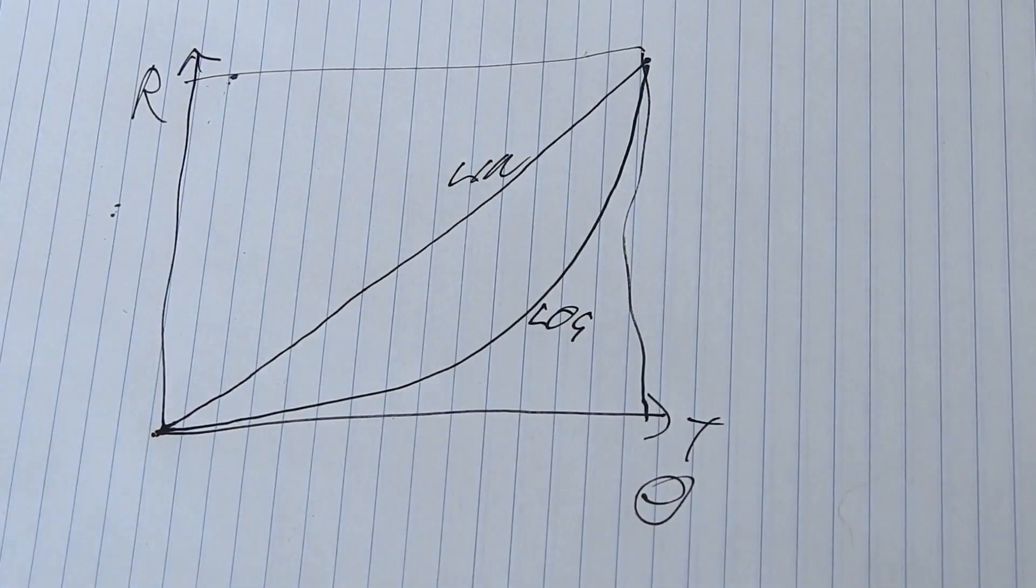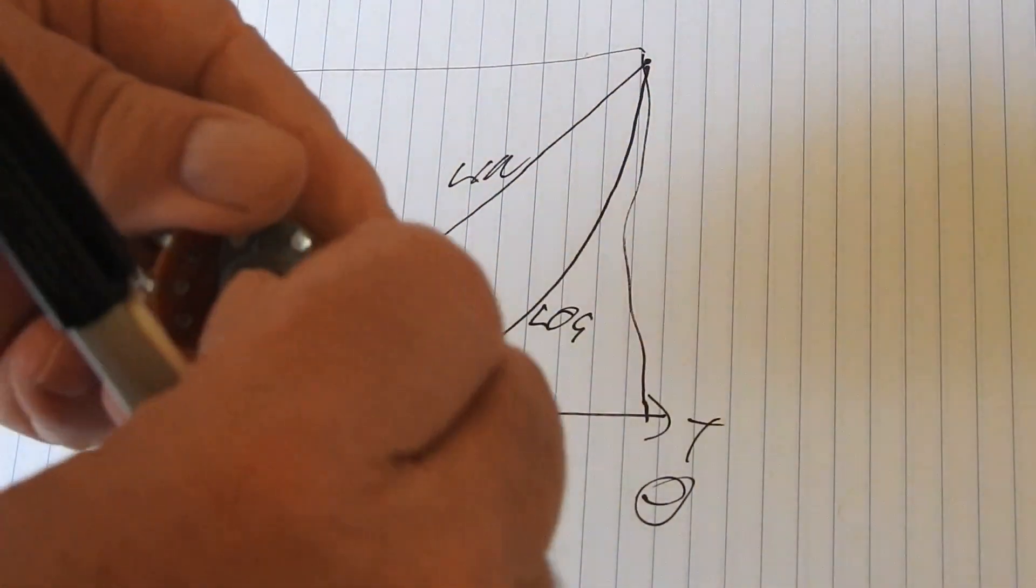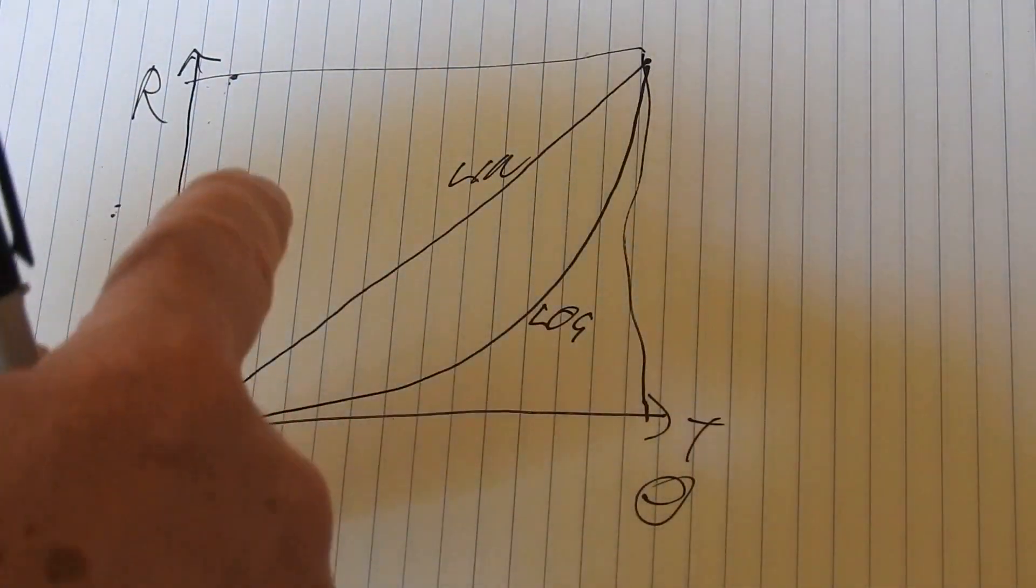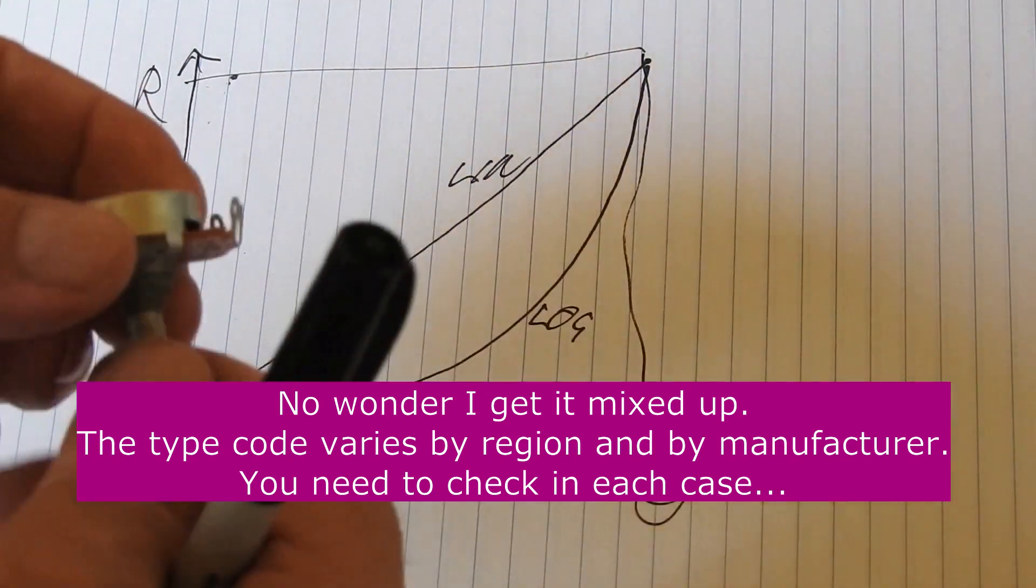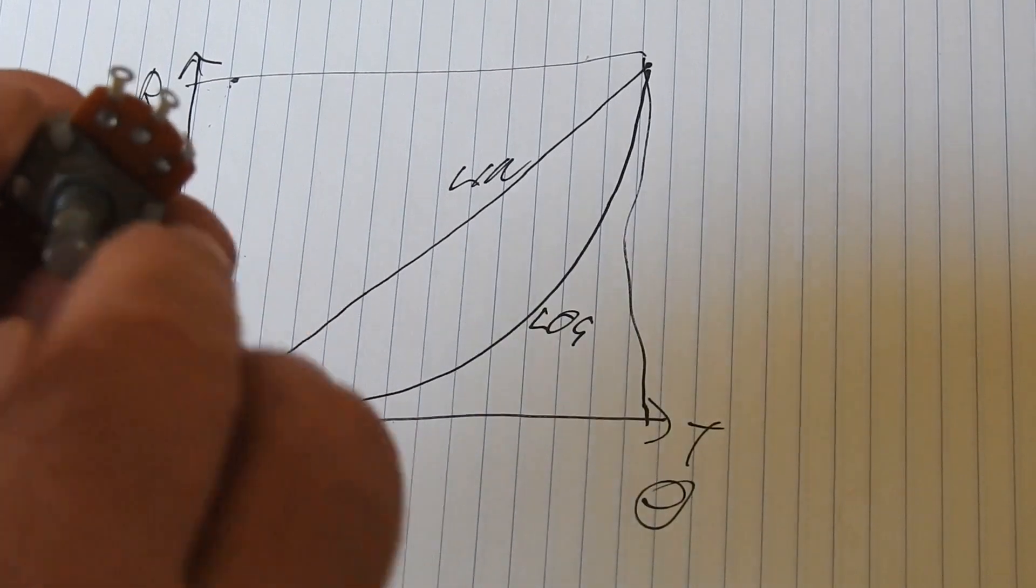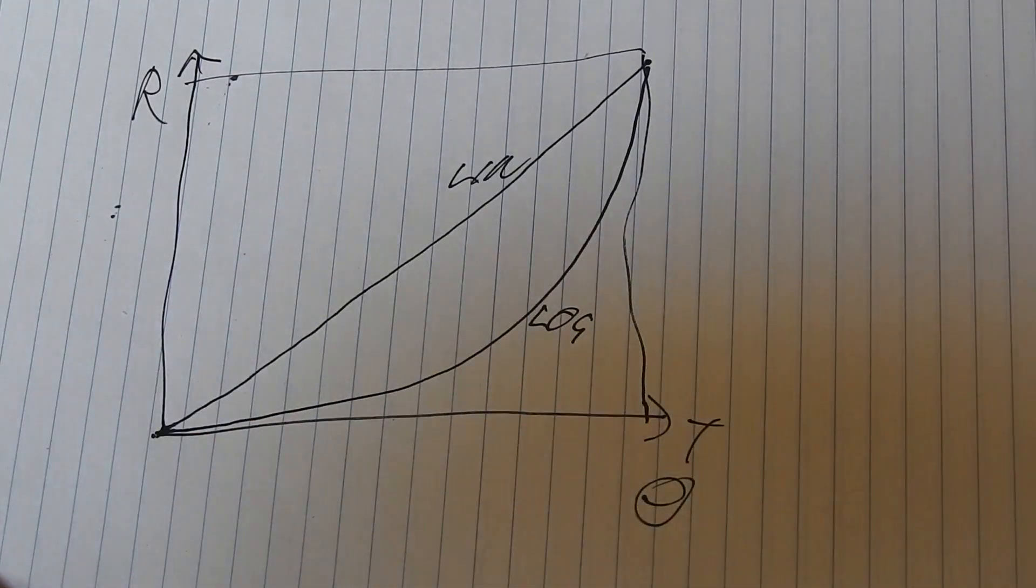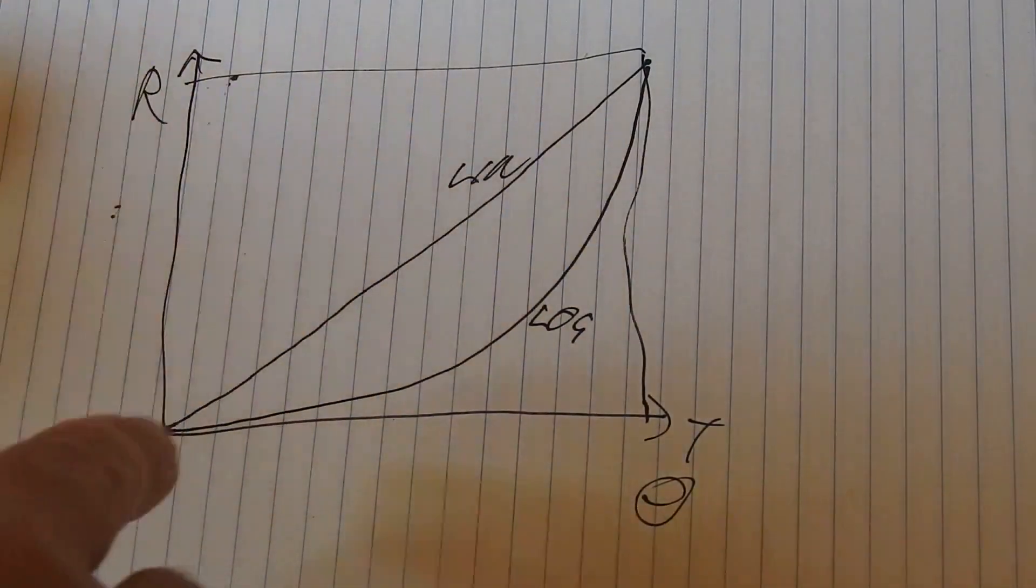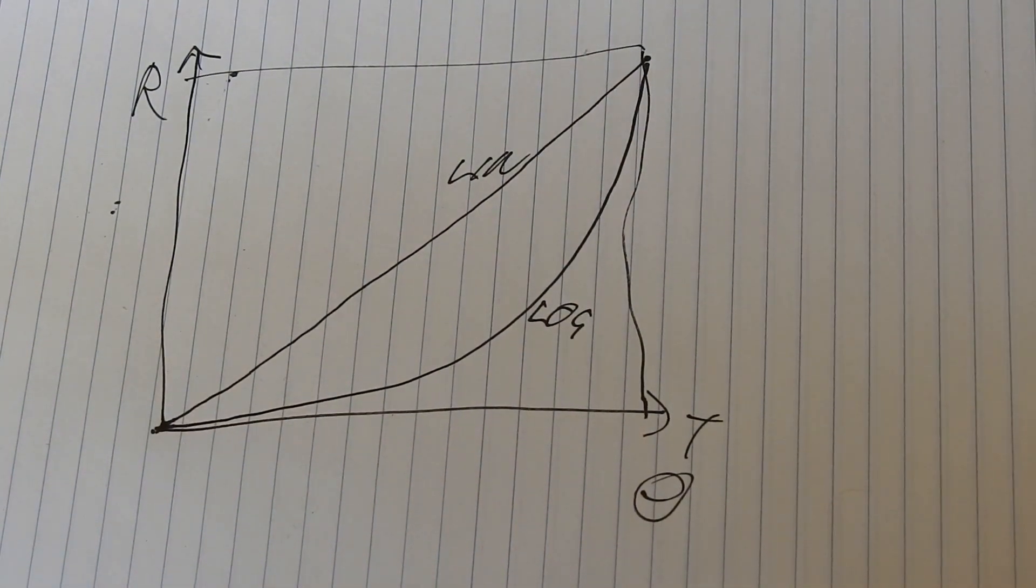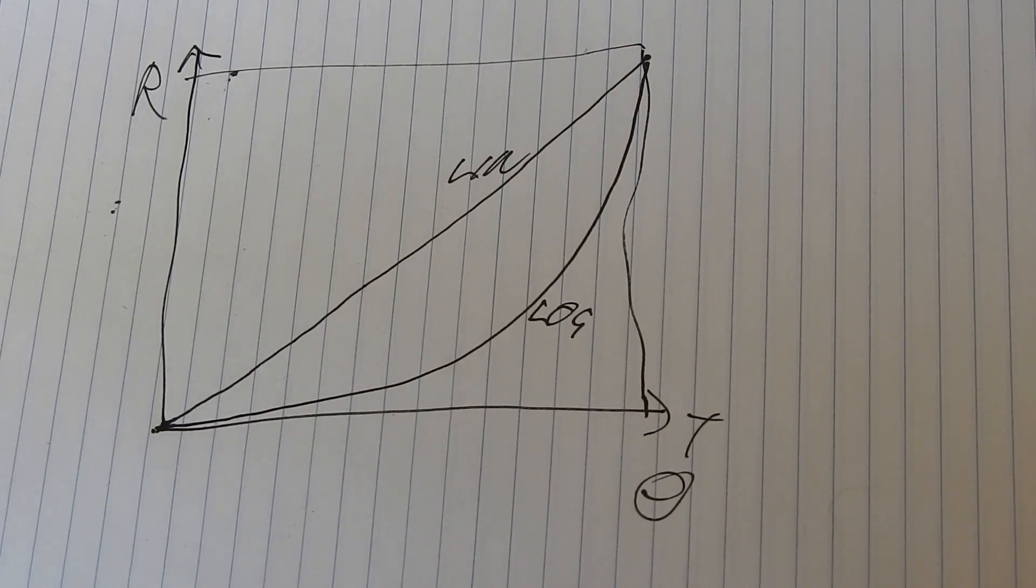And I always thought that a log pot, which they look the same, you've got to check. They usually have an A if they're linear, and I think it's A with linear and B or C with log, although I might have it backwards. I always thought inside there the resistance material was actually continuously varying to provide that log graph.